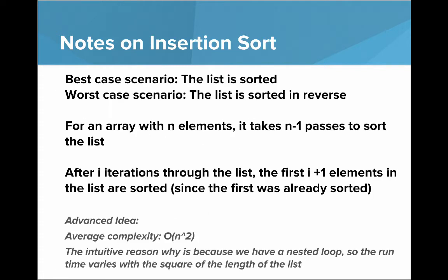Some notes on insertion sort: the best case scenario is that the list is already sorted, and the worst case scenario is that the list is sorted in reverse. For an array with n elements, it takes n minus one passes to sort the list. After i iterations, the first i plus one elements are sorted — not necessarily the absolute minimum values, but sorted relative to themselves. The average complexity for insertion sort is big O of n squared, similar to selection sort, because of the nested loop.